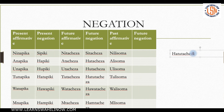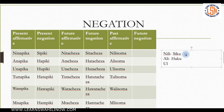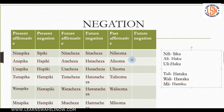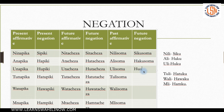To negate the past tense: 'nili' becomes 'siku,' so 'nilisoma' becomes 'sikusooma.' 'Ali' becomes 'haku,' so 'alisoma' becomes 'hakusoma.' 'Uli' becomes 'huku,' so 'ulisoma' becomes 'hukusoma — you did not read.' 'Tuli' becomes 'hatuku,' so 'tulisoma' becomes 'hatukusoma — we did not read.' 'Wali' becomes 'hawaku,' so 'walisoma' becomes 'hawakusoma.' And 'mli' becomes 'hamku,' so 'mlisoma' becomes 'hamkusoma.'